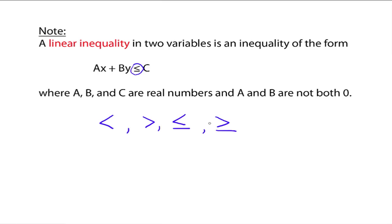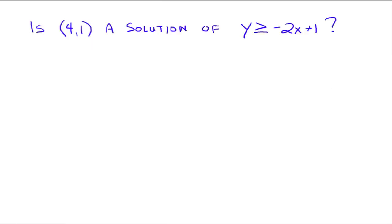Before we had equations — AX plus BY equals C — but now we've got four inequalities that can happen. So let's talk about solutions of linear inequalities. Is (4, 1) a solution of the inequality Y is greater than or equal to negative 2X plus 1? Just like before with an equation, we plug the X and Y coordinates in and determine if the statement is true or false.